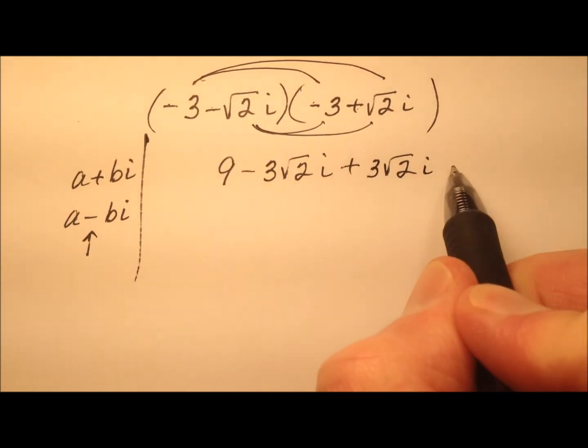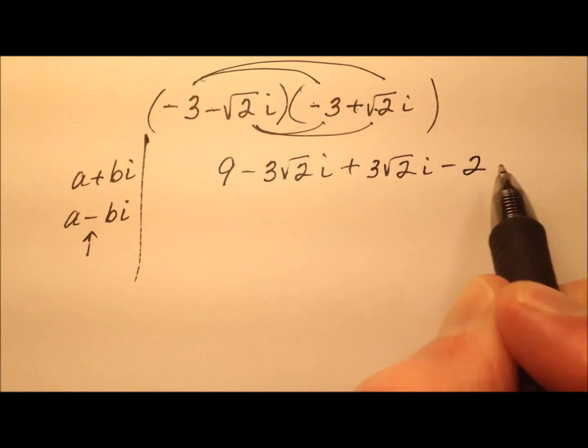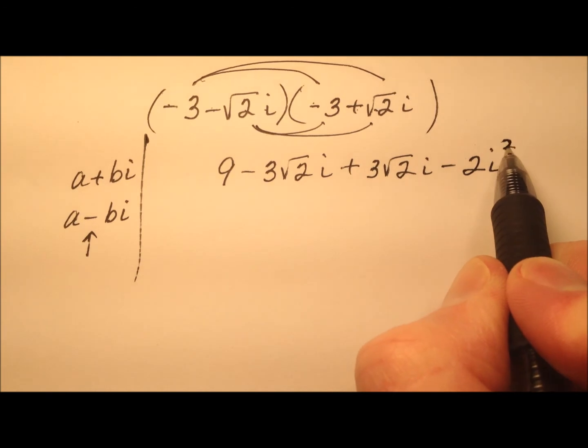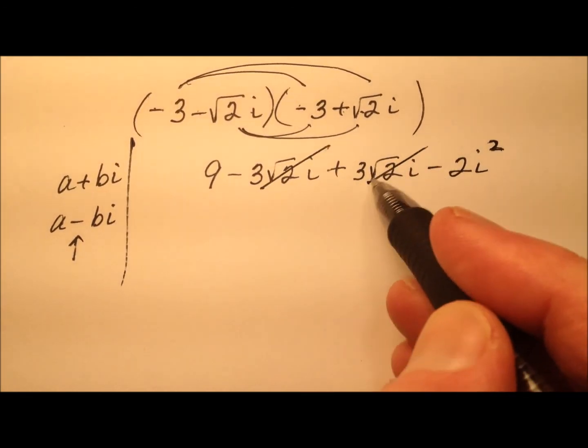And then a negative and a positive will make a negative. Square root of 2 times the square root of 2 makes 2, and i times i is i squared. First thing you notice here, these middle terms cancel.